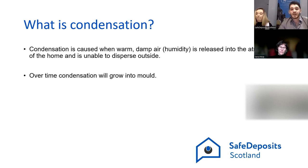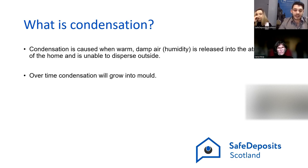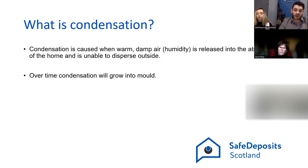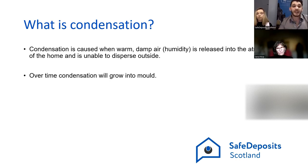So what is condensation? Condensation is caused when warm damp air is released into the atmosphere of the home and is unable to disperse outside. This normally happens because of lack of ventilation in the property, and that allows the water-laden air to come into contact with a cold surface and just lay there. Over time, that condensation will grow into mould and can lead to a plethora of health issues and implications. So that is the three main types: mould, damp and condensation.